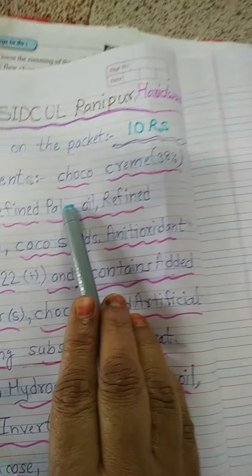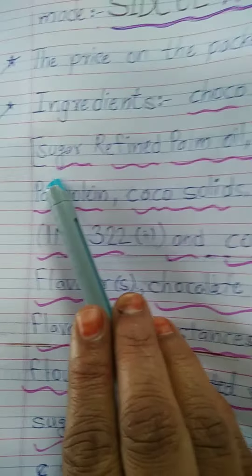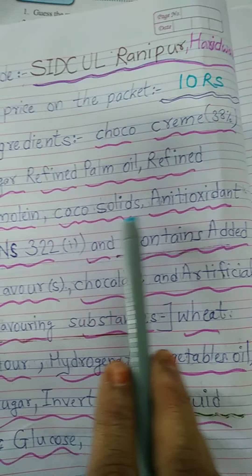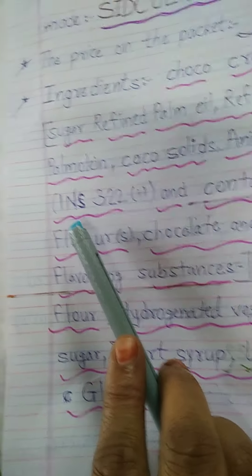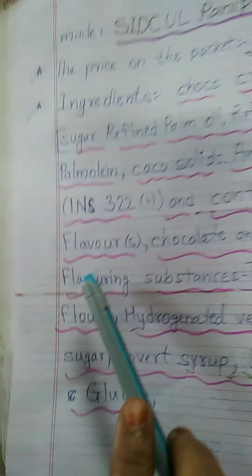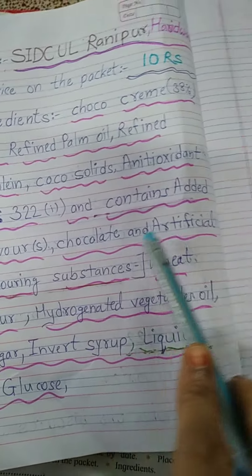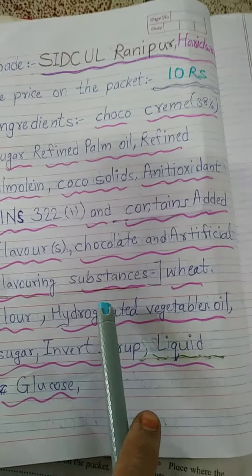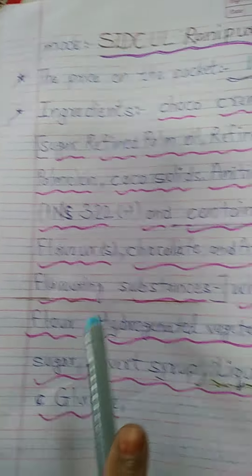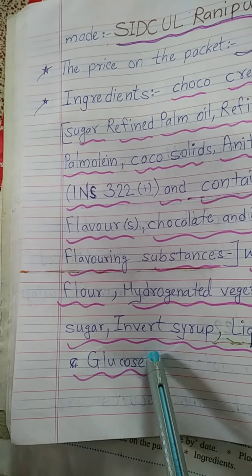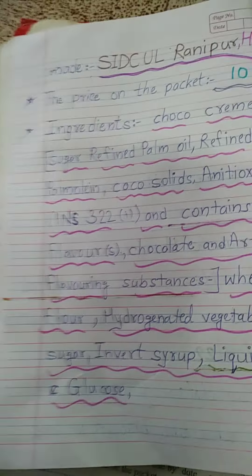Ingredients — Choco Creams: 38% Sugar, Refined Palm Oil, Cocoa Solids, Anti-Oxidant INS-321. Contains added flavors: Chocolate, an artificial flavoring substance. Wheat Flour, Hydrogenated Vegetable Oil, Sugar, Invert Syrup, Liquid Glucose.